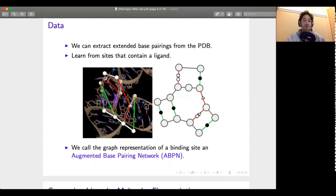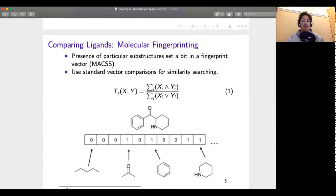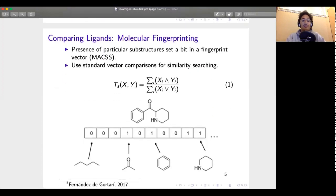We call this type of representation an augmented base pairing network and on the ligand side we essentially use a standard encoding which represents ligands as vectors. Any machine learning method needs to have its input and output encoded in a vector form and this representation just tells you for a set of fixed chemical substructures whether your input contains it so that gives you a set of zeros and ones which represent the ligand.